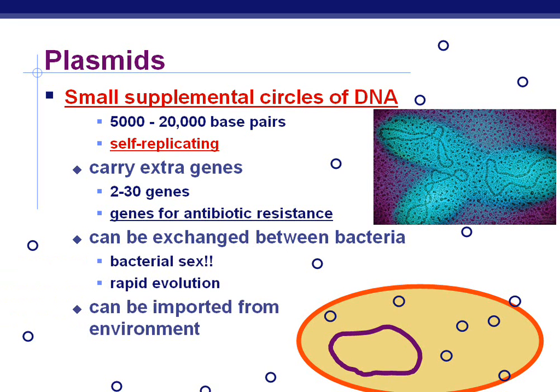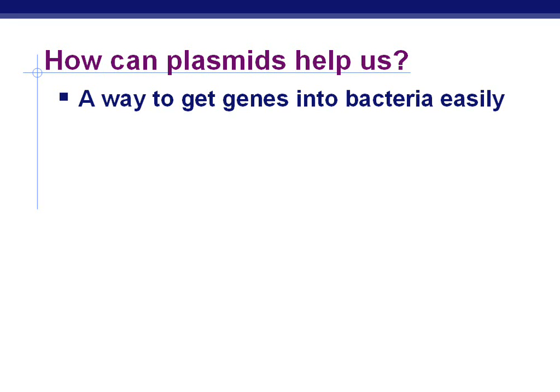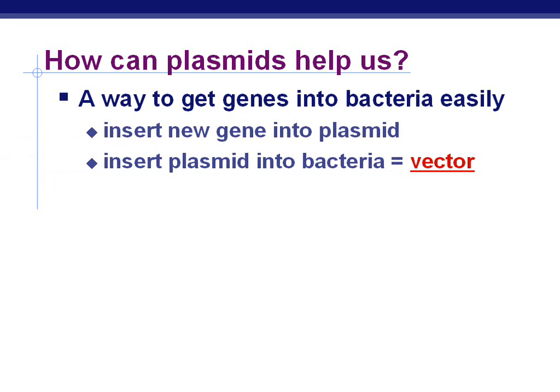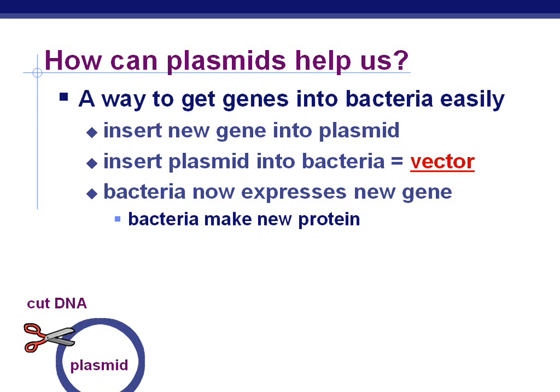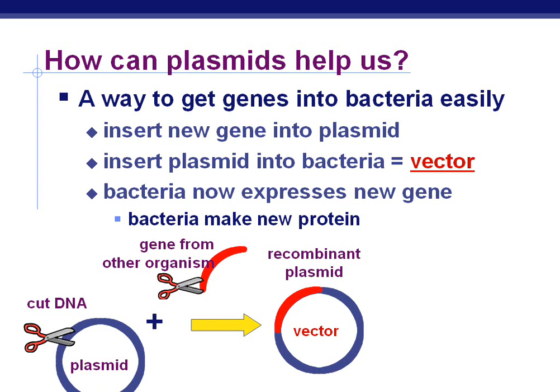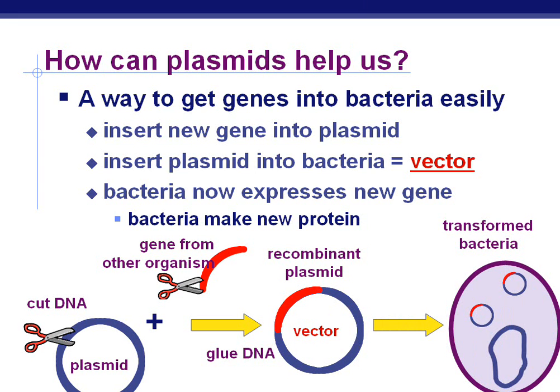So how can plasmids help us? There's a way for us to get genes into bacteria easily. We can insert a new gene into a plasmid, and then insert that plasmid into a bacteria — we call this a vector, the vector that carries the gene that we want. The bacteria now expresses that new gene and will make that new protein for us. With a diagram: we cut the DNA, take the gene from a different organism that we want to make more of, and glue that new section of gene in. So here we have our recombinant plasmid, or our vector, and then our transformed bacteria with that gene in it.